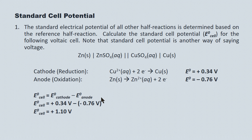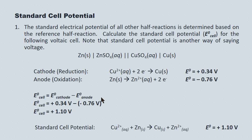Here's our equation for the overall electrical potential of the cell. We substitute in our values and we get positive 1.10 volts. That's consistent with what we've seen for this copper-zinc battery previously. The positive sign indicates a spontaneous redox reaction will take place and electrons will flow.